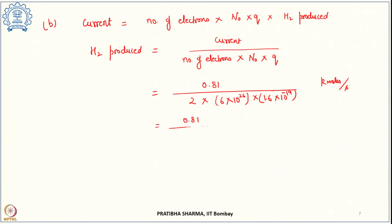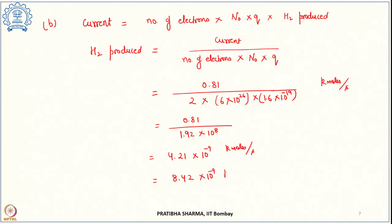Solving gives 0.81 divided by 1.92×10⁸, which is 4.21×10⁻⁹ kilo moles per second. Converting to kg per second by multiplying by 2 gives 8.42×10⁻⁹ kg of hydrogen being produced per second. This is the answer to part B.